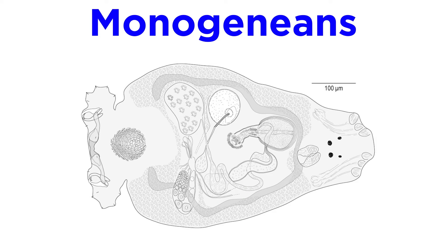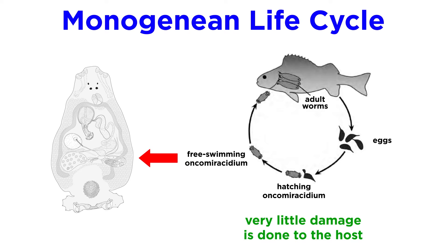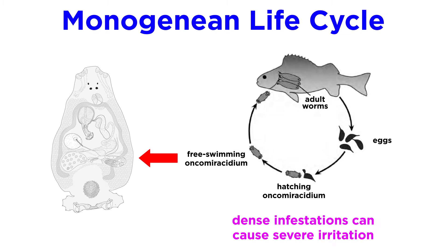Monogeneans, unlike the Trematodes, cause considerably less damage to their hosts, since their life cycle within the host is generally quite a simple one, unlike some Trematodes which undergo complex migrations, causing extensive damage along the way. However, dense infestations can cause severe irritation, and extremely dense infestations can cause extreme damage, and even death.